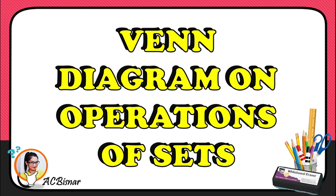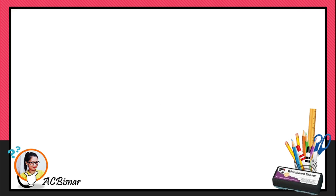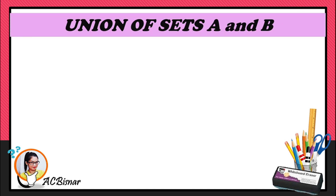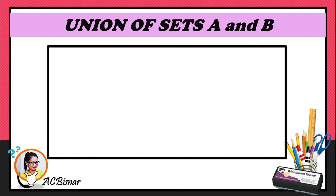This will be a very quick lesson about Venn diagrams on operations of sets. Let us start with the union of sets A and B. We're going to draw a rectangle that represents the universal set. As we all know, the universal set is composed of all the elements from set A and set B.